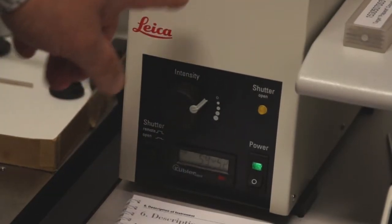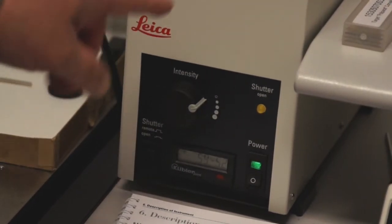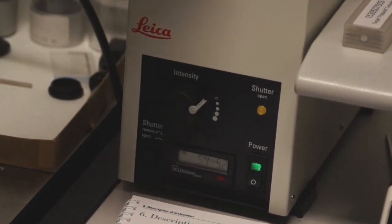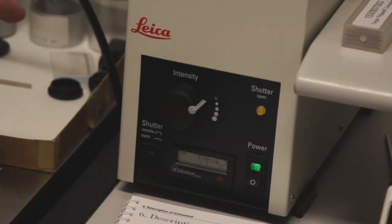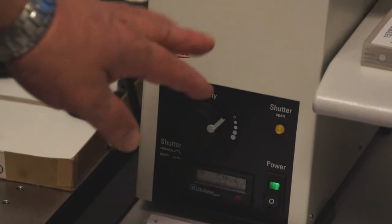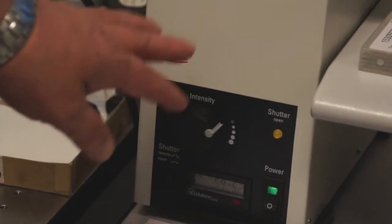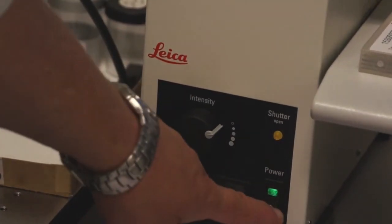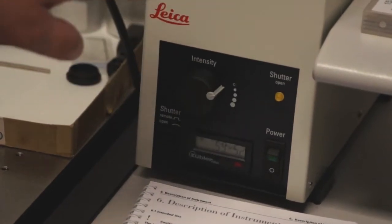Do not forget to turn off the mercury burner before you turn off the microscope. This is a very expensive bulb and the waveguide gel is very expensive. One person already left it on over a whole weekend and we had to replace a $500 bulb. So turn off the power on the front of the mercury burner lamp house.